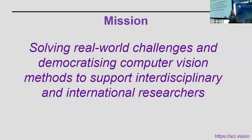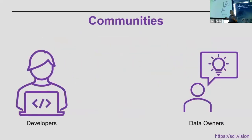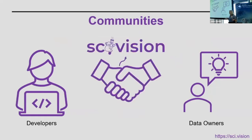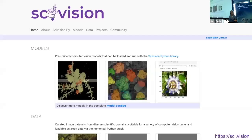The mission of SciVision is to solve real-world challenges and democratize computer vision to support interdisciplinary and international researchers. The idea is that we have people developing algorithms, developing models, using computer vision, and we have data owners, and we want to bring them together. We have this catalog where people can upload models.